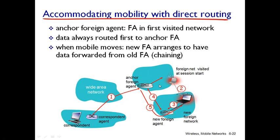One more problem is what will happen if the visited user keeps on changing the foreign network. The solution is that each foreign network contains one more agent called the anchor foreign agent. As soon as the visited user leaves one network and moves to another foreign network, the anchor foreign agent will be updated with the address of the new foreign agent. That information will be provided to the correspondent so they can contact the user directly. This is called direct routing, and it solves the problem of indirect routing.